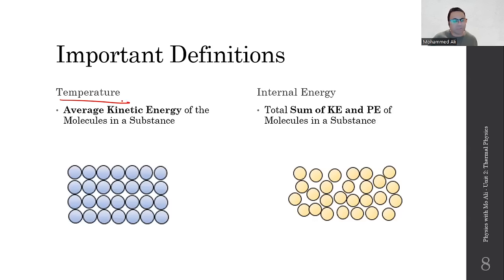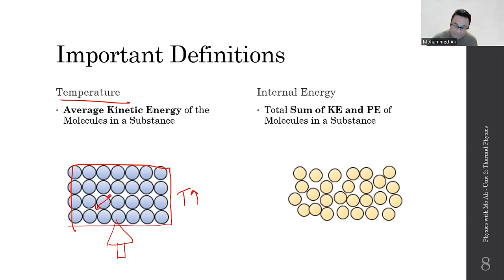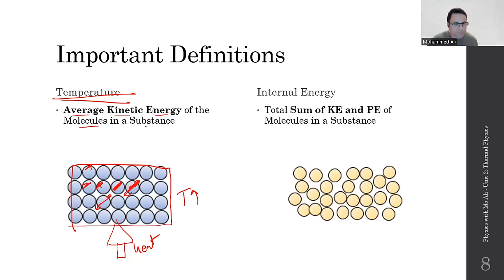We need to define temperature. Whenever you heat a substance, on the outside it gets hotter — the temperature rises. But on the inside, the molecules gain energy and start to move faster. If it's a solid, they vibrate faster. The faster they vibrate, the higher the temperature of the substance. So when you heat something, the molecules inside move faster. This is why we define temperature as the average kinetic energy of the molecules in a substance. It's often measured in degrees Celsius.